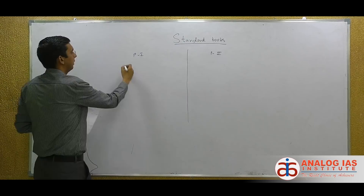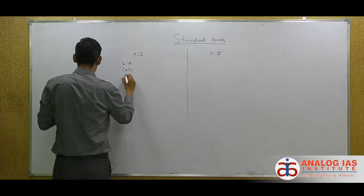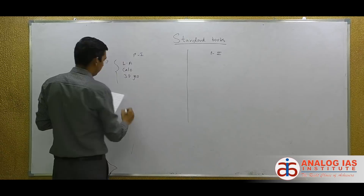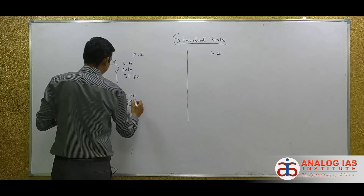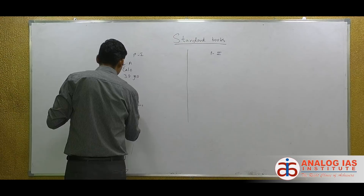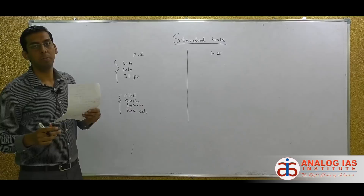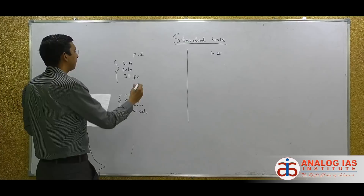In paper 1, the first thing is linear algebra, and we have calculus and 3D geometry. These three are in section A. In section B you have ordinary differential equations, statics, dynamics, and vector calculus. Broadly these are the areas.